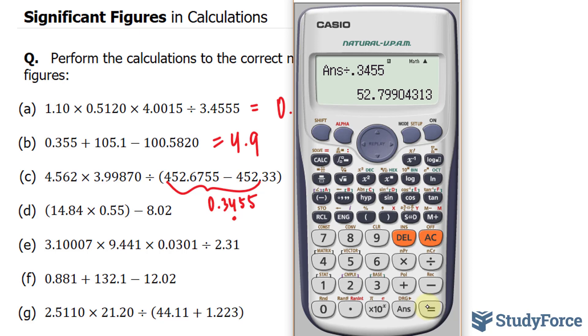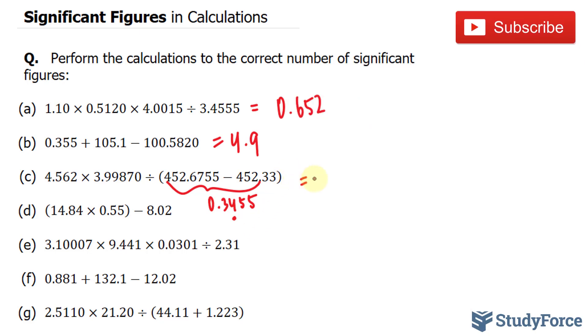This gives us the number 52.7990. Our final answer has to have two significant figures because this number right here is two significant figures. And when it comes to multiplying and dividing, you always use the number with the least amount of digits as your significant figures. So our final answer here should be 53 because this 7 is greater than 5. We end up with 53.